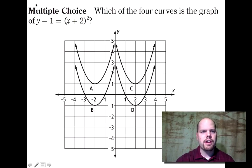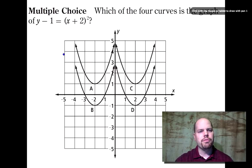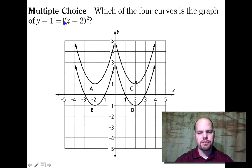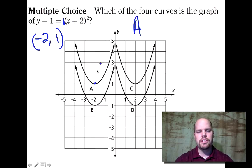Multiple choice: which of the four curves is the graph of y minus one equals the quantity x plus two squared? All you need is the vertex, since each graph has a different vertex. They all open up with a positive coefficient of one, same steepness. The vertex here is x minus negative two, so x is negative two, and y minus one so y is one — vertex at (-2, 1). That puts the vertex right there, so it has to be graph A.